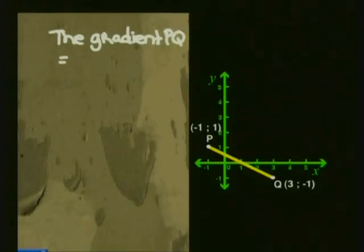There we go. We have a way to write down the gradient of any line segment. The gradient of PQ which I can write as M of PQ will be negative.